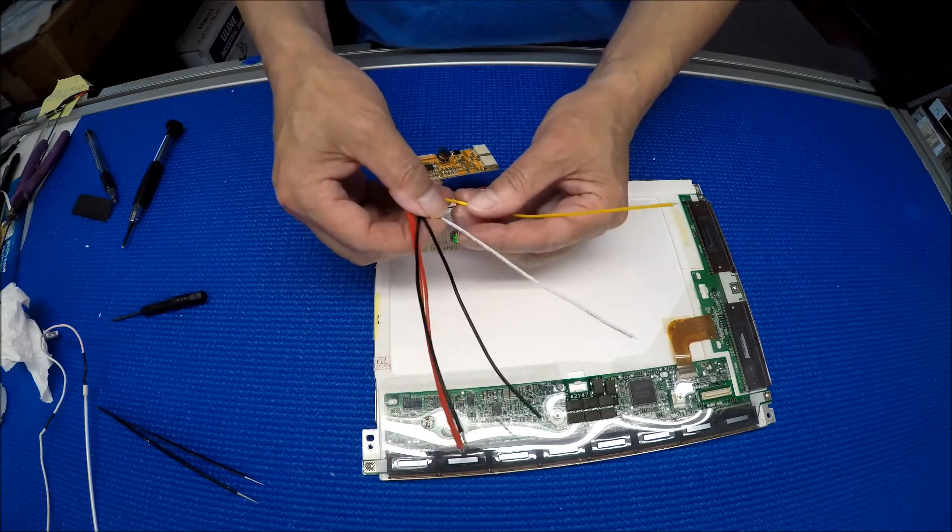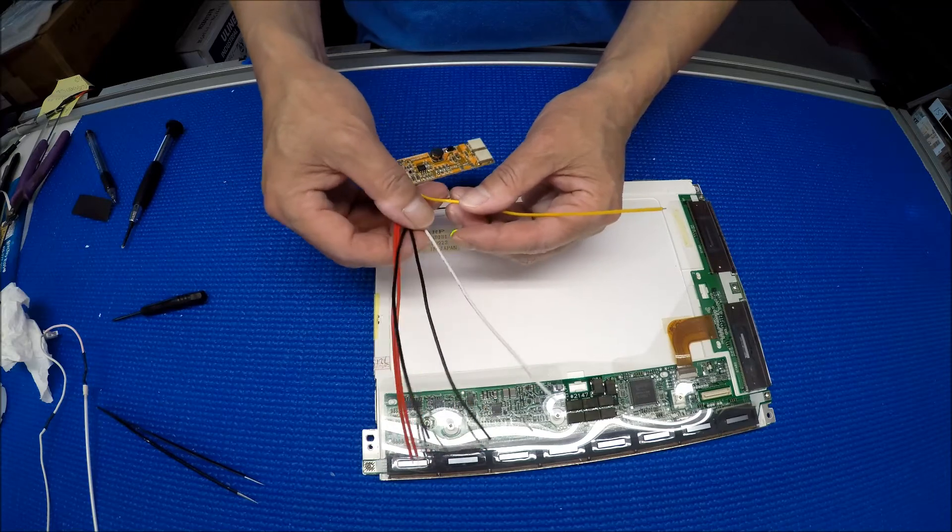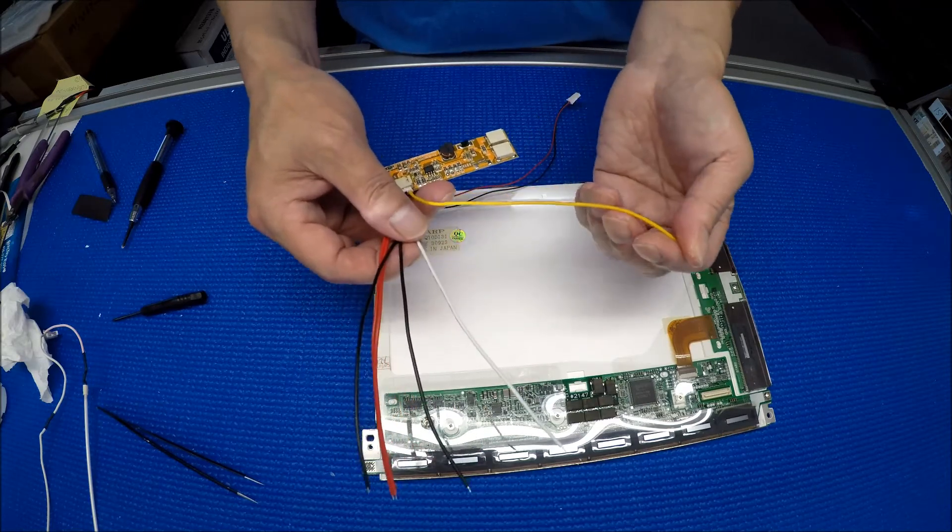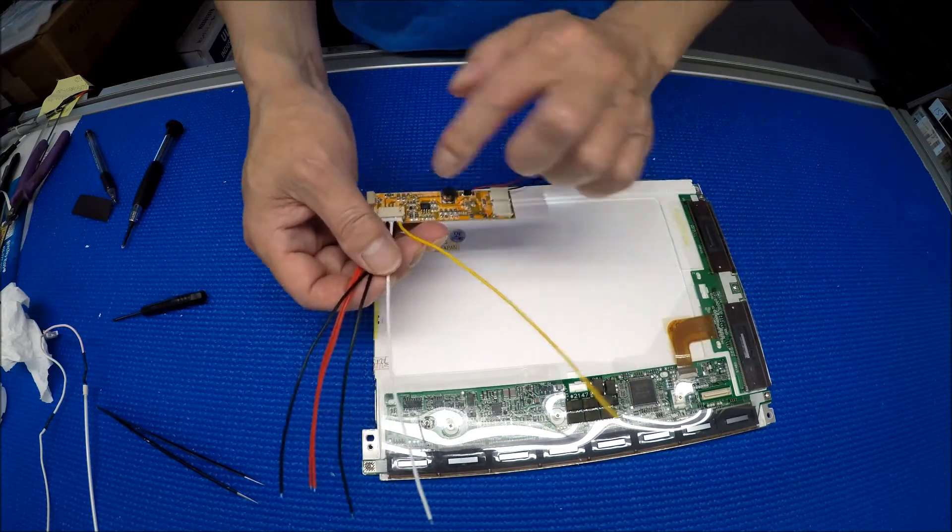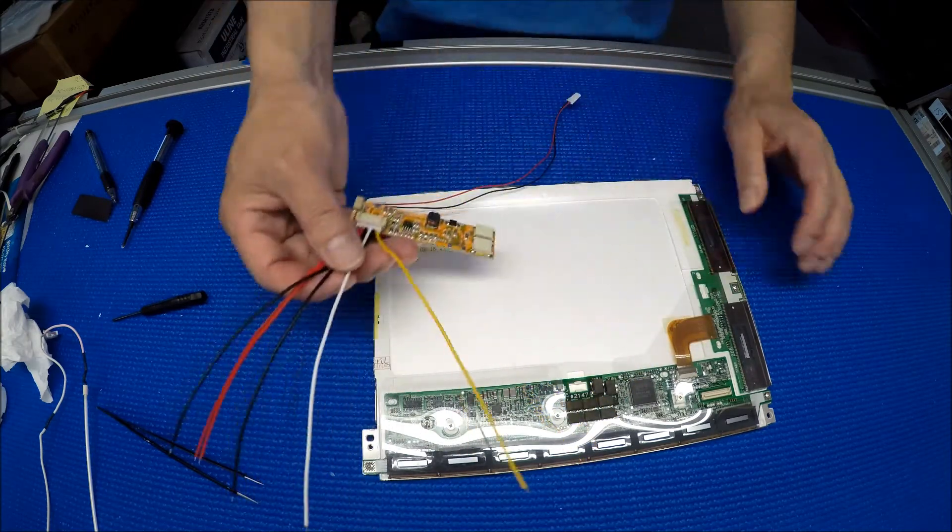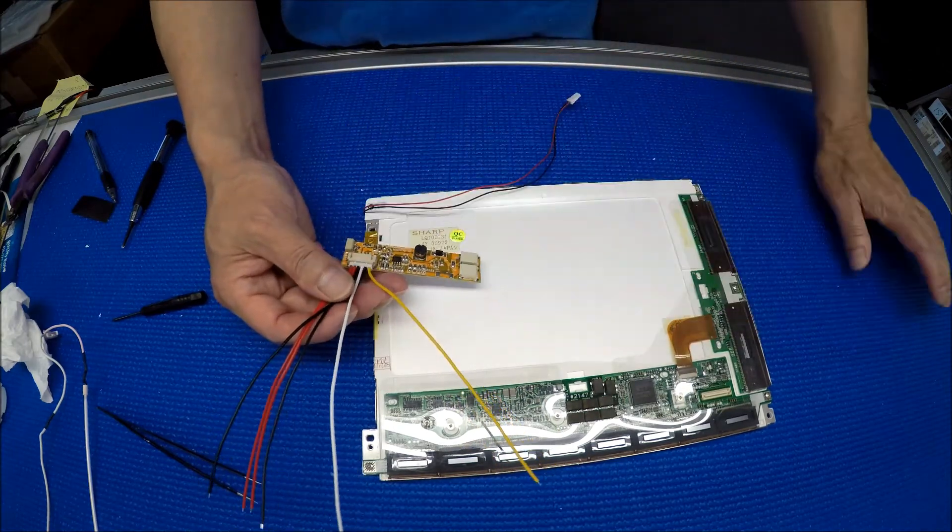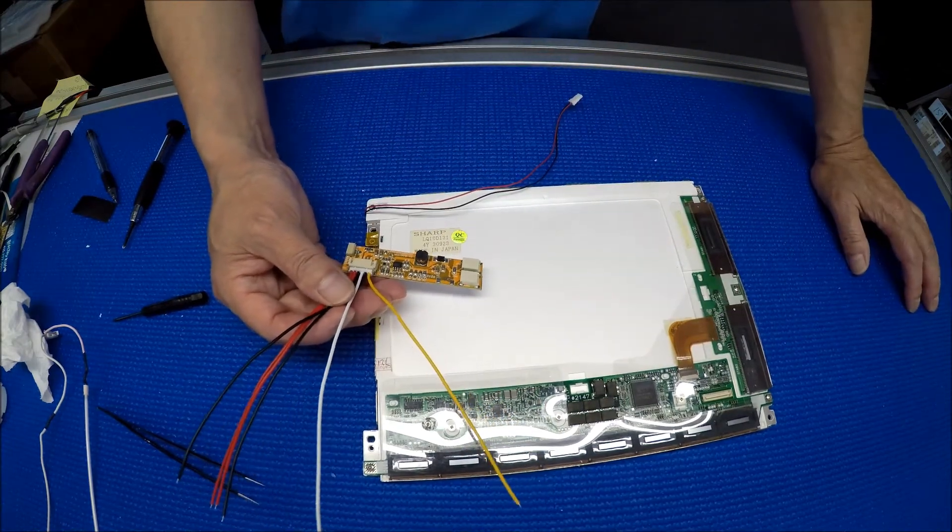White is for ADJ, which brightness adjustment. Usually there's no connection in white. But yellow is really important. It's called enable. So you can apply any between three to five volt to turn this driver on and off. You can find, you will find all this supply voltage from your old existing inverter wire harness.